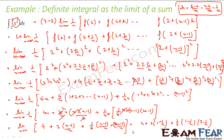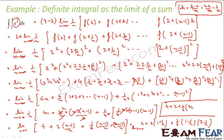Putting n equal to infinity: 1 by n becomes 0, so we get 4 plus 2 times 1 minus 0 equals 2, plus 1 by 6 times 1 times 2 equals 1 by 3. So the answer is 4 plus 2 plus 1 by 3, that is 6 plus 1 by 3, which equals 19 by 3. That is my answer. To summarize: apply the formula, expand the terms, find the pattern, group the 2 squared, 1 by n, and 1 by n squared forms, use the AP formula, and get the answer.